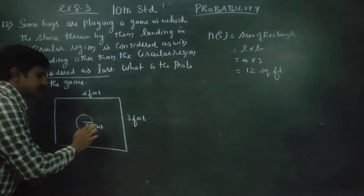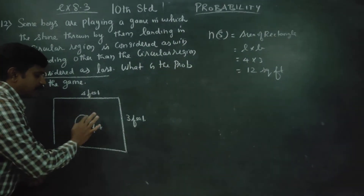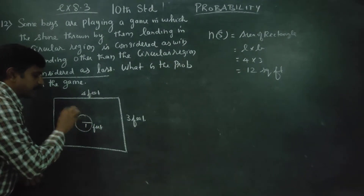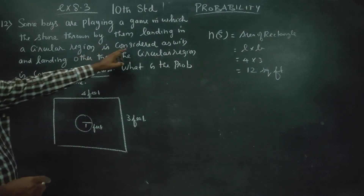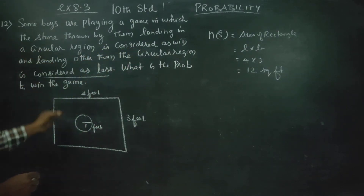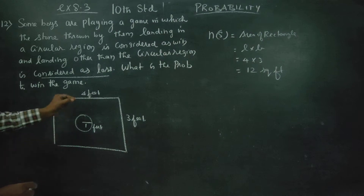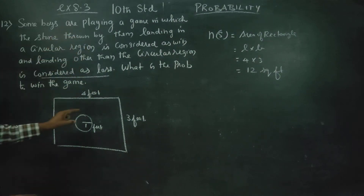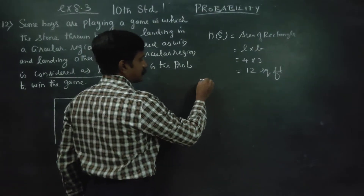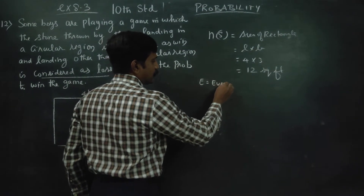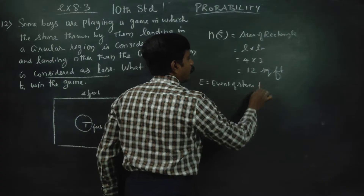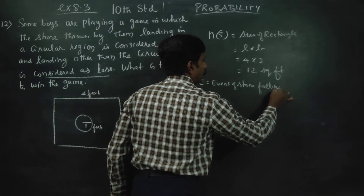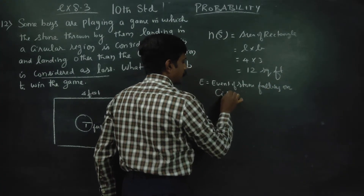The event is the circular region. This is the event — landing on the circular region is considered as a win. E is equal to the event of the stone falling on the circular region.